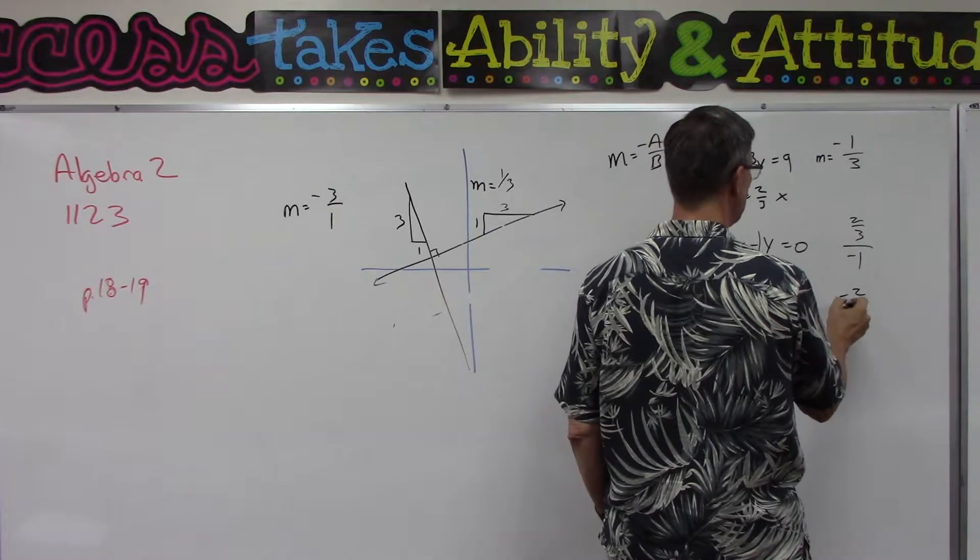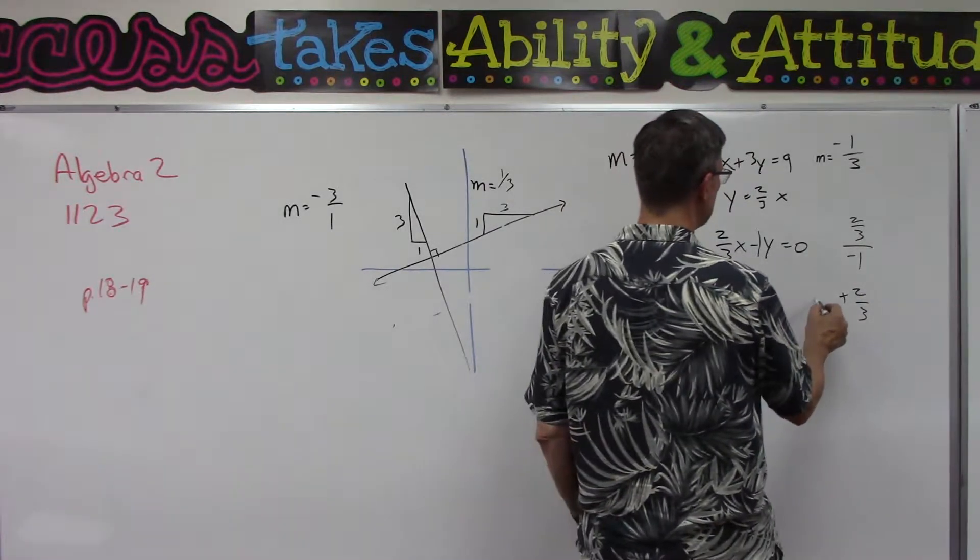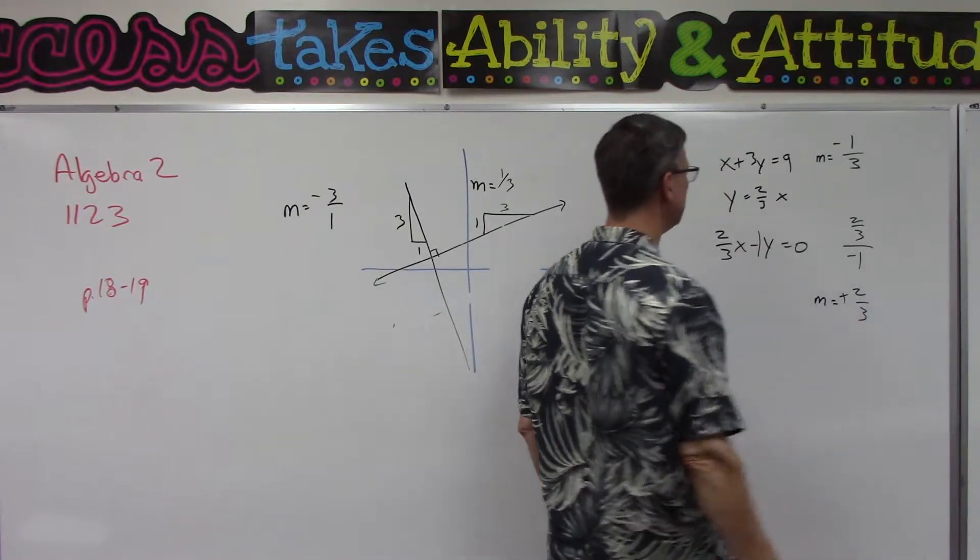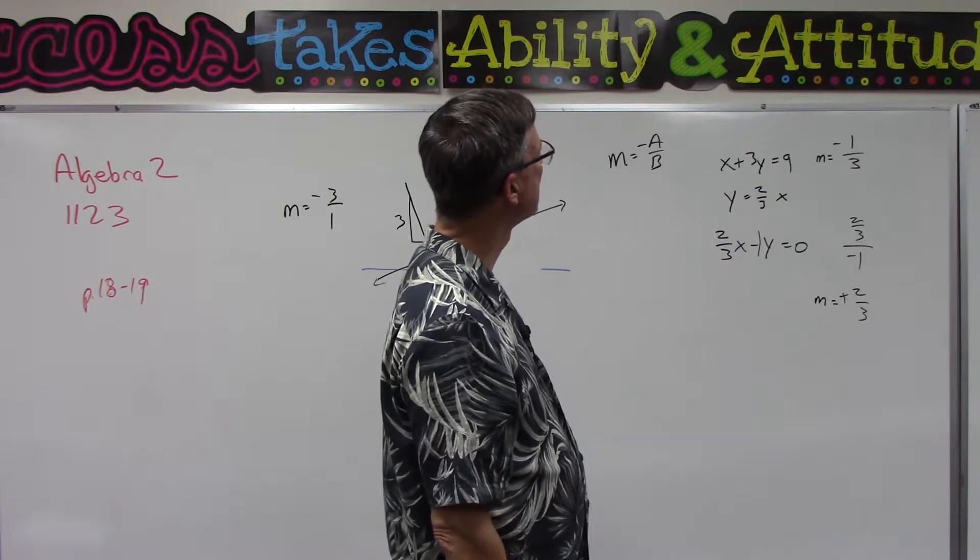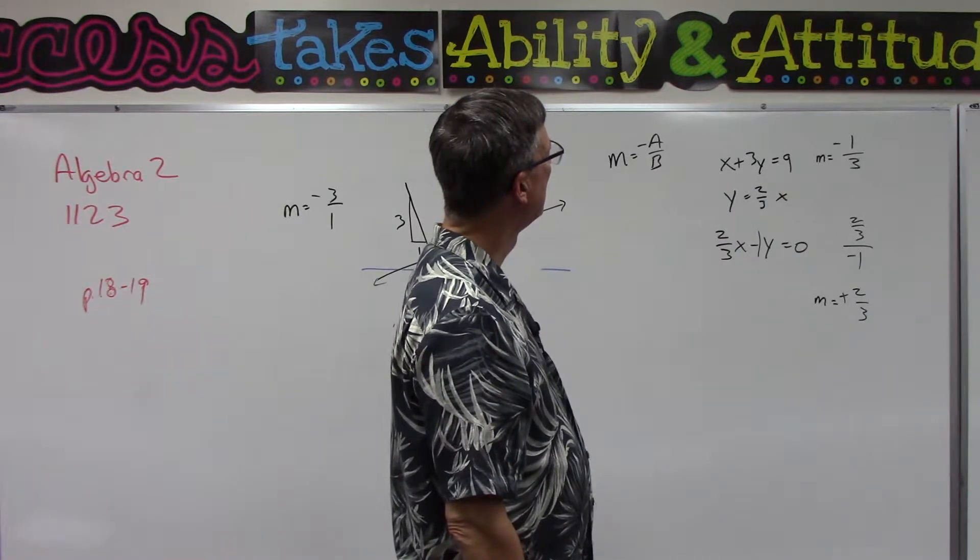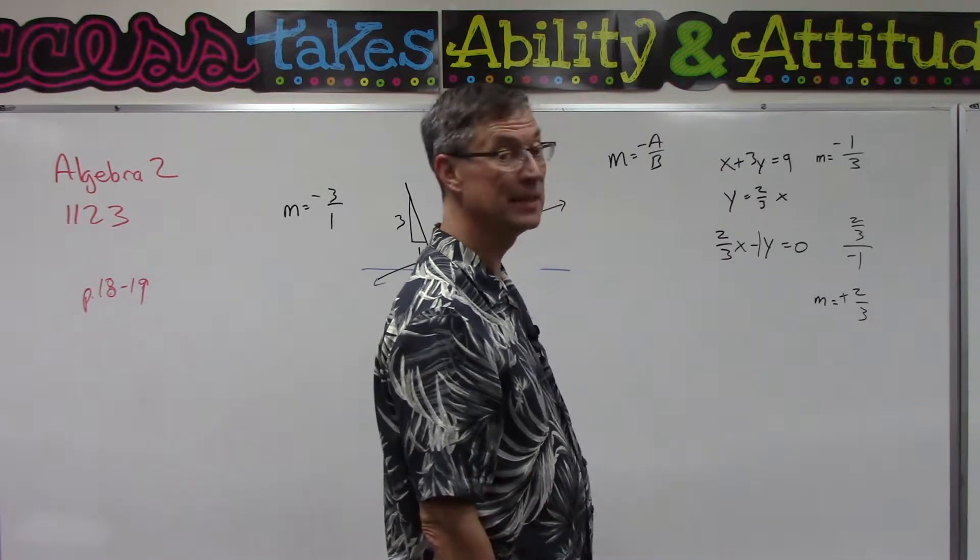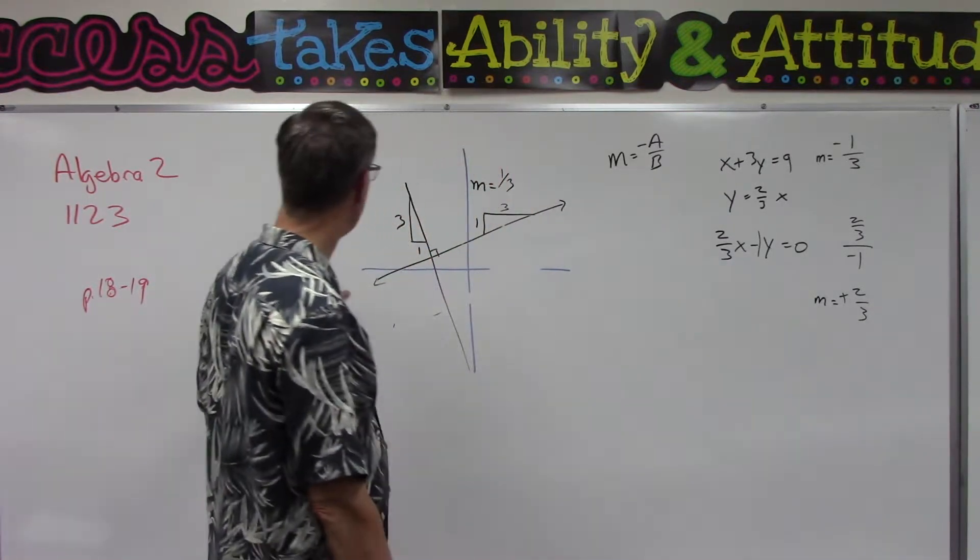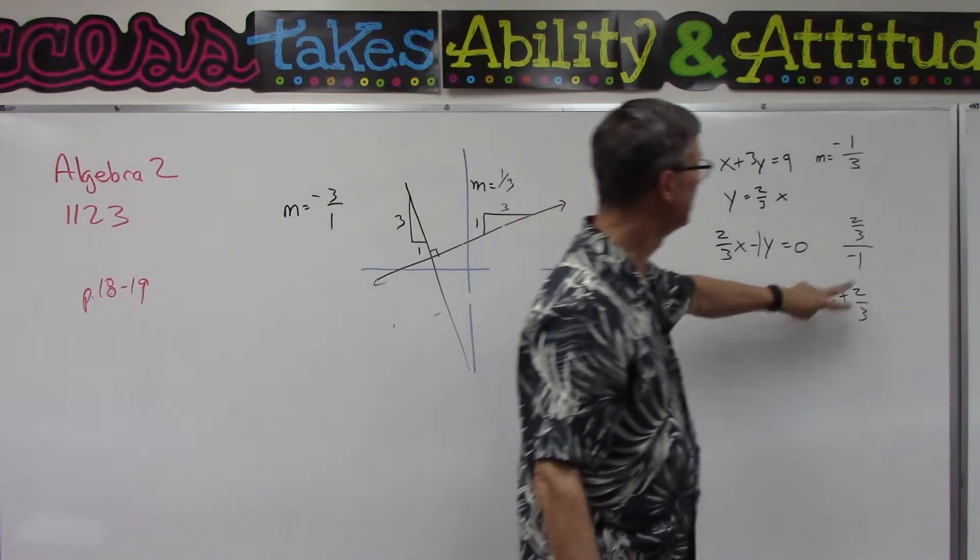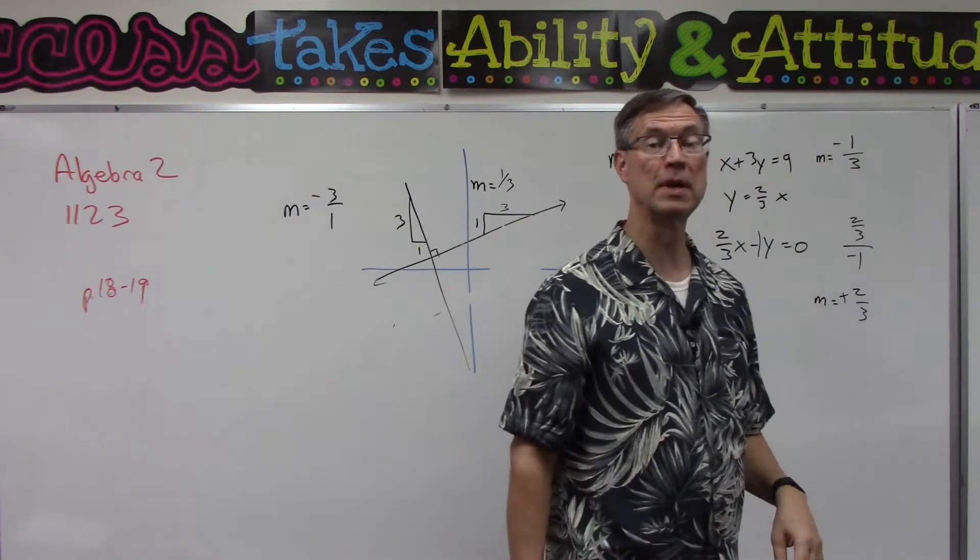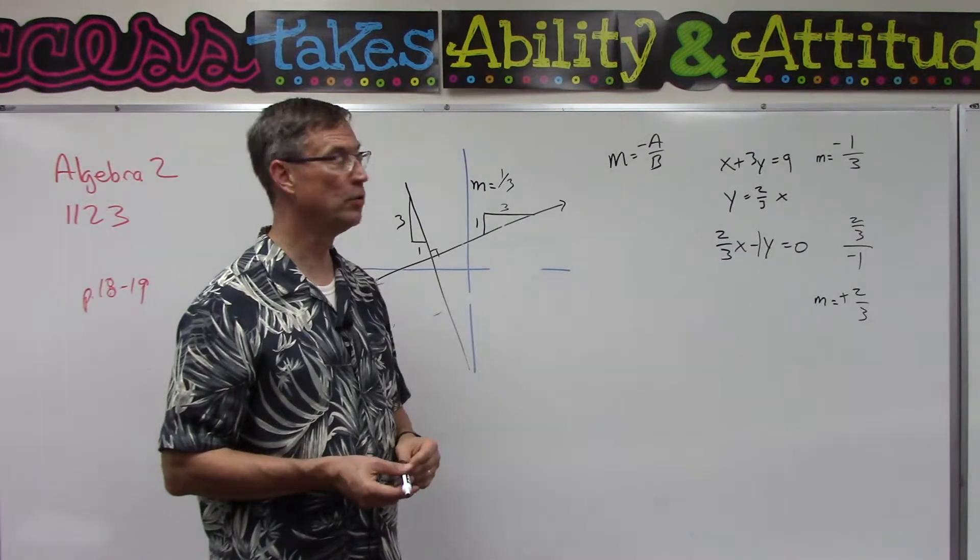So this one, the slope is positive two-thirds. Now are those the same? And the answer is no, they're not the same, so they're not going to be parallel. And one is not the opposite reciprocal, so it's not even perpendicular. Okay, but now they want us to graph both of these lines.